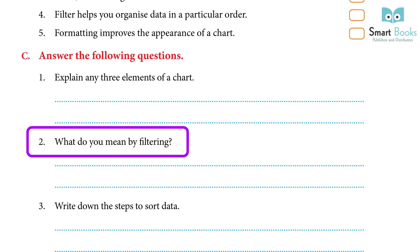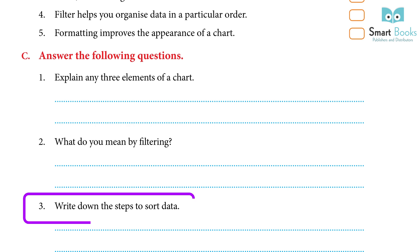2. What do you mean by filtering? Answer — Filtering: filters temporarily hide some of the data in a table so you can focus on the data you want to see. 3. Write down the steps to sort data. Answer — Steps: 1. Select the range of cells containing the data to be sorted. 2. On the Data tab in the Sort and Filter group, click Sort to open the Sort dialog box. 3. From the Sort By drop-down list, choose the column to sort. 4. Select the Values option from the Sort On drop-down list. 5. From the Order drop-down list, choose Largest to Smallest. 6. Click Add Level to add a new level below the first level. 7. Specify the column name and order as A to Z in the new level.